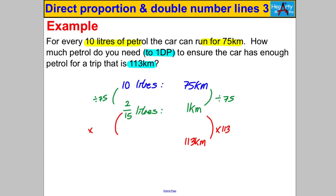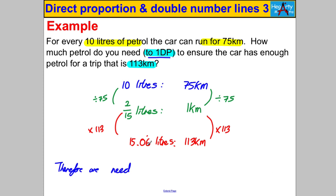2/15 × 113 = 15.0̄6̄ litres recurring. Rounded to one decimal place: 15.1 litres. That will certainly cover the distance needed. And that's it for this video — thanks for watching.